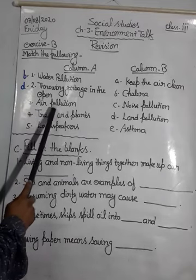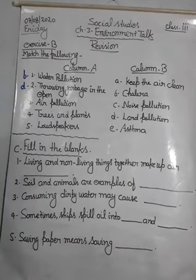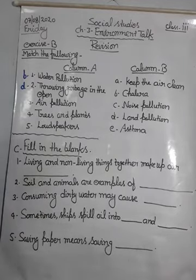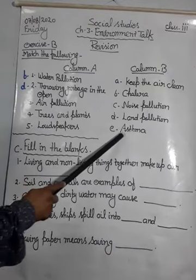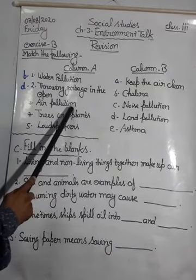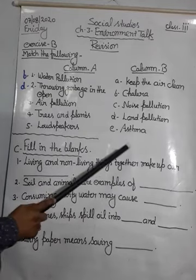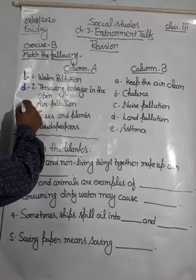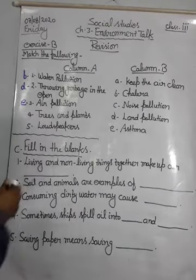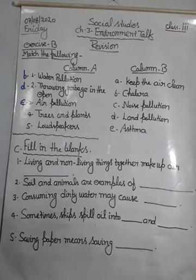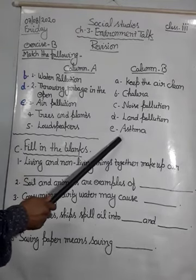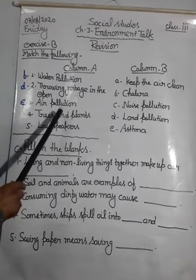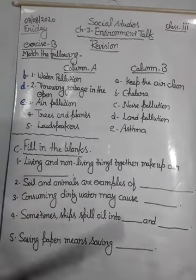And next is air pollution. Air pollution is the cause of asthma. So the answer will be E. Asthma is a kind of respiratory disease and it is caused by air pollution.